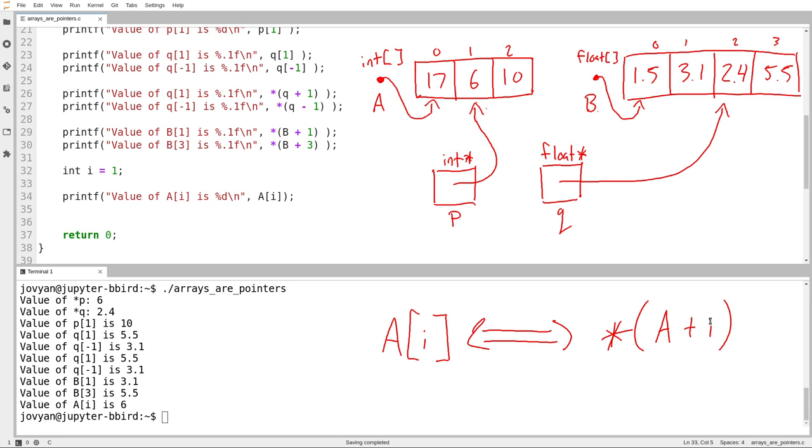A plus i, well, that's no different than i plus A, is it? I mean, obviously we know addition is commutative. It works in both directions. 5 plus 6 equals 6 plus 5. So, of course, I know already that I could write star A plus i. I could use pointer arithmetic instead of my subscripting because the subscripting is equivalent to pointer arithmetic. So I'll actually write that in this time.